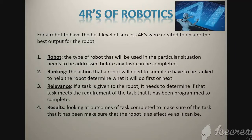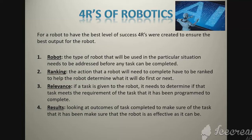For a robot to have the best level of success, four pillars were created to ensure the best output for the robot. First, Robot: the type of robot that will be used in the particular situation needs to be addressed before any task can be completed. Second, Rank: the actions that a robot will need to complete have to be ranked to help the robot determine what it will do first or next. Third, Relevance: if a task is given to the robot, it needs to determine if that task meets the requirements it has been programmed to complete. Fourth, Results: looking at outcomes of tasks completed to make sure that the robot is as effective as it can be.